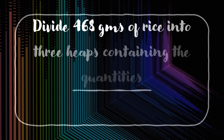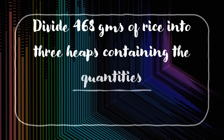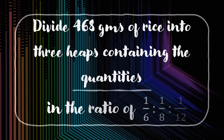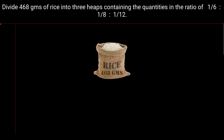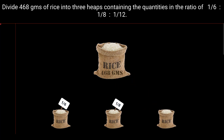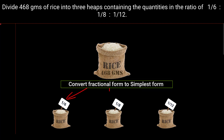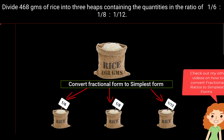Divide 468 grams of rice into three heaps in the ratio 1/6 : 1/8 : 1/12. The total quantity is given and the ratio is in fractional form. Whenever a ratio is given in fractional form, we need to convert it into the simplest form first, and then divide the total quantity as per the ratio.